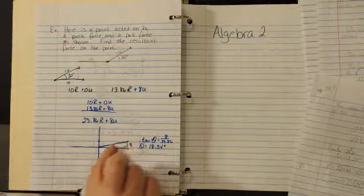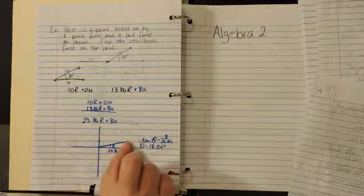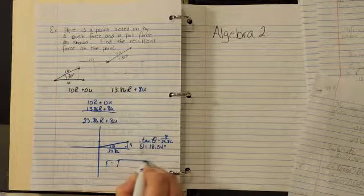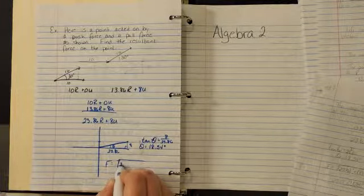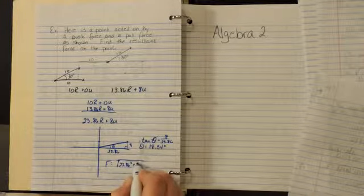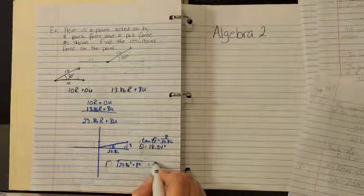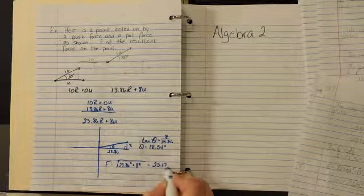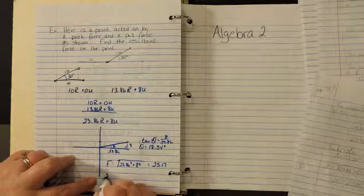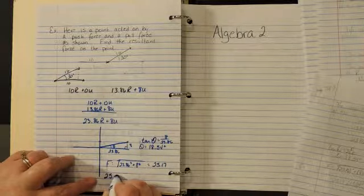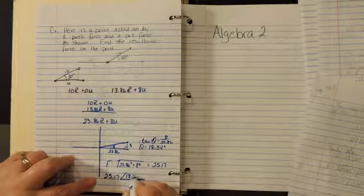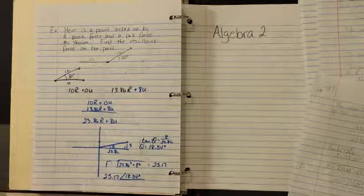Our hypotenuse here, the magnitude of our force, is the square root of 23.86 squared plus 8 squared, which equals 25.17. So the resultant force in polar form is going to be 25.17 at 18.54 degrees because it's in the first quadrant.